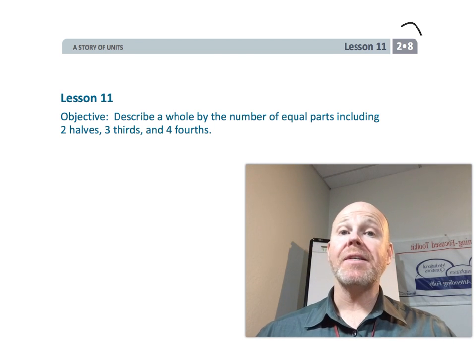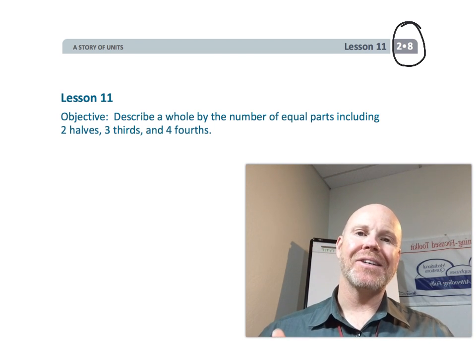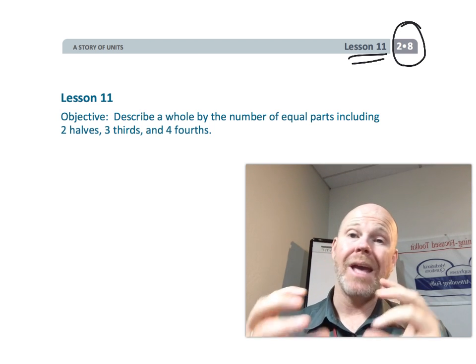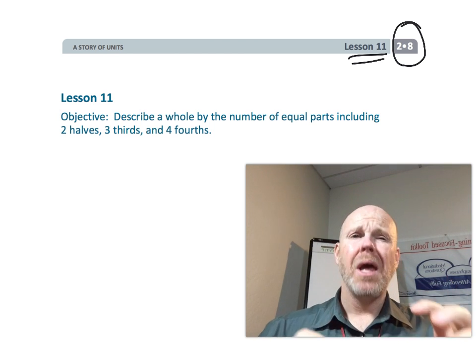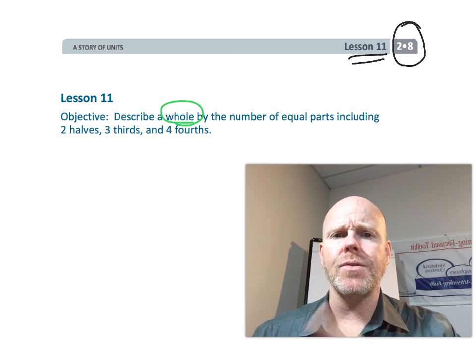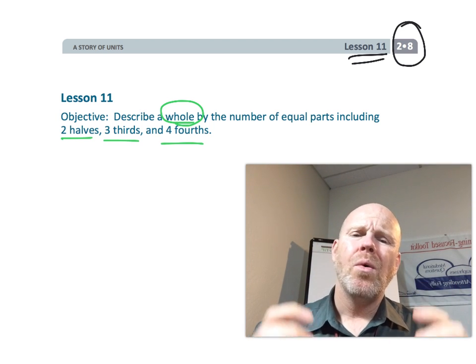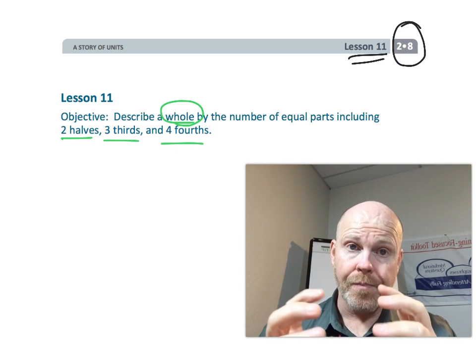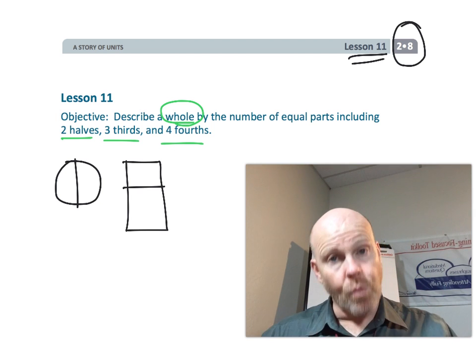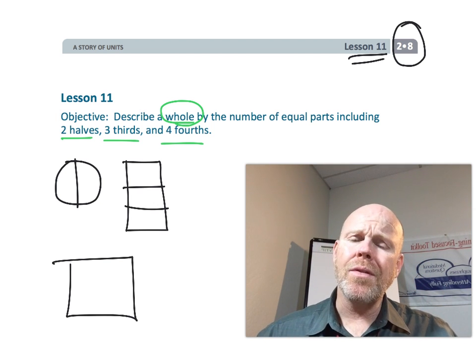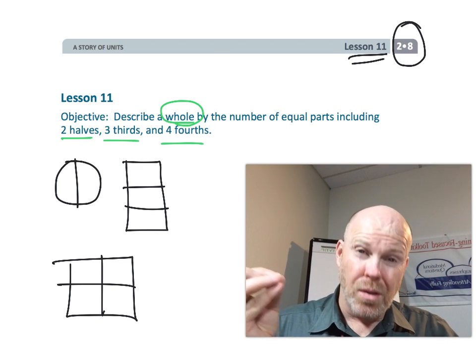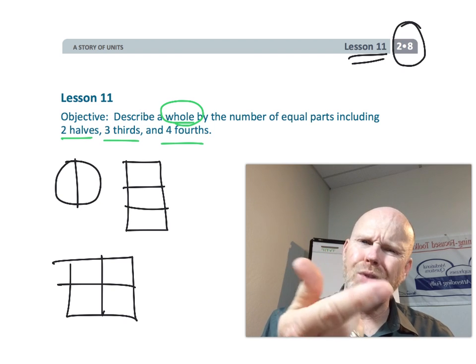All right, this is second grade, module 8, lesson 11, and in this lesson, students are going to be describing a whole, as in W-H-O-L-E, by the number of equal parts, including halves, thirds, and fourths. So the idea is, we want students to be learning that a whole is made up of two halves, or three-thirds, or four-fourths, and even more than that, we want students to be able to identify what a whole would look like if they're given a third. So let's get started.